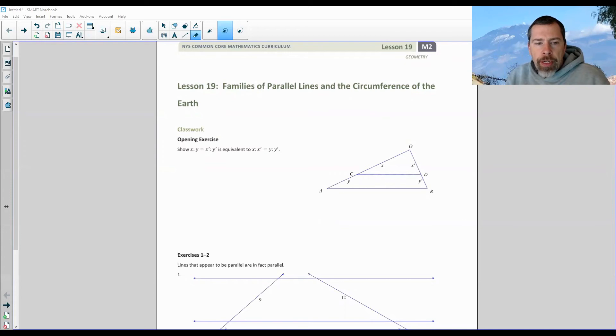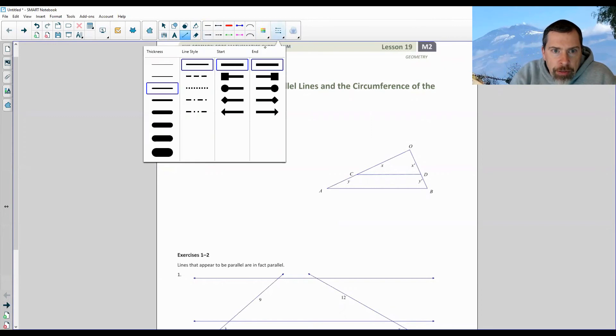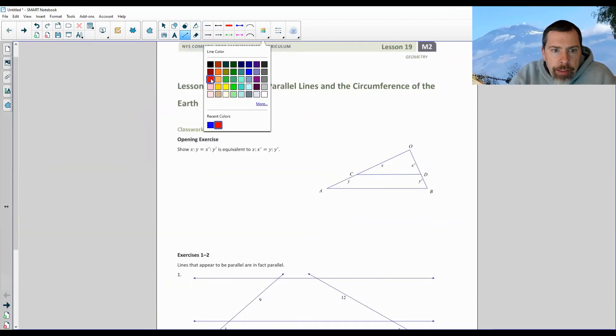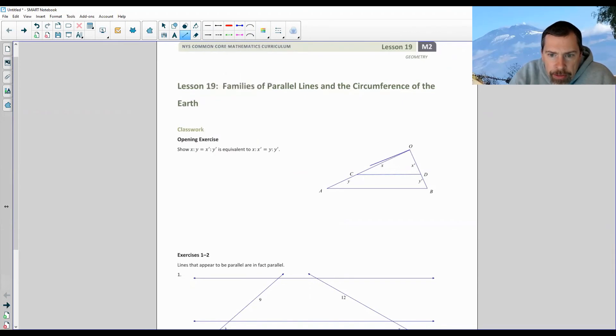Okay, the classwork opening exercise says show that x is to y as x prime is to y prime. So let's start by explaining what they're saying here. I'll use a segment and color code it to make it thin. They're saying x is to y, so we're comparing, we're taking x. This here.